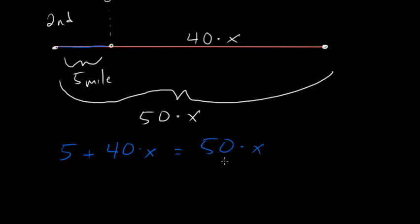And now we just have to solve for X so I can subtract 40X from each side and I'll be left with five is equal to 10X. And if I divide each side by 10, I'll be left with my answer. 5 tenths is the same thing as one half.